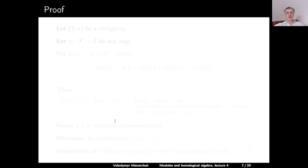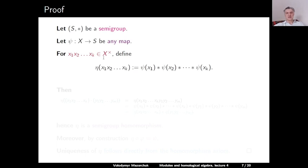We claim — and this is the main result for free semigroups — that the pair consisting of the semigroup X⁺ and this map φ is a free semigroup on X. Proof: let S be any semigroup and ψ from X to S any map. For a word x₁, x₂, …, xₖ in X⁺, we define η of this word as the element ψ(x₁) ∗ ψ(x₂) ∗ … ∗ ψ(xₖ). This is an element in S.